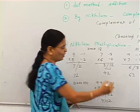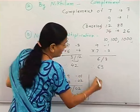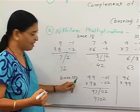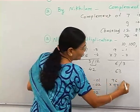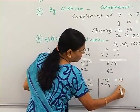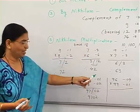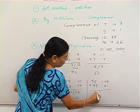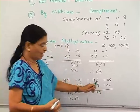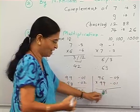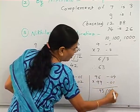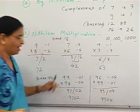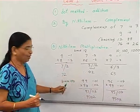One more example for base 100: 96 into 99. The base is 100 so there should be 2 digits — 96 is minus 04 and 99 is minus 01, because 96 is less than 100 by 4. Then 99 minus 4 equals 95 (or 96 minus 1 also gives 95), and 4 into 1 gives 4, so the answer is 9504.